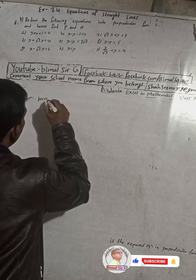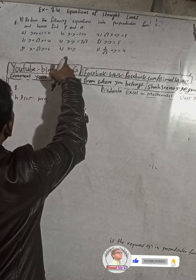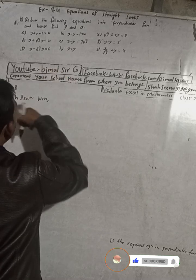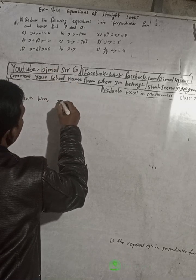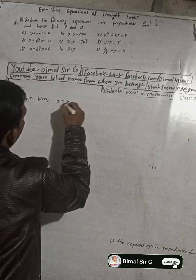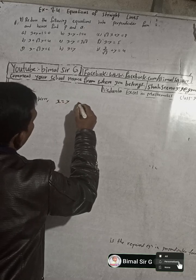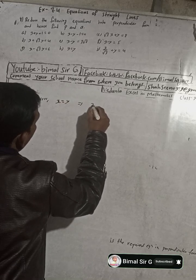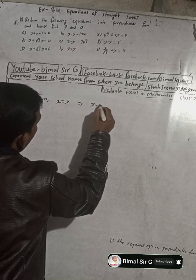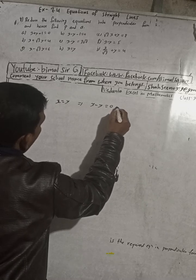Okay, yes, question number 8h. The question is given: x is equal to y. This equation can be written as x minus y is equal to 0. We can call this equation one.